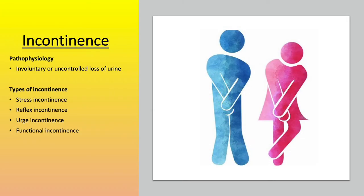We're going to start with incontinence, which is the involuntary or uncontrolled loss of urine. There are many different types of incontinence. Stress incontinence is the involuntary loss of urine due to abdominal pressure — for instance, when we cough, laugh, or sneeze, urine can leak out.